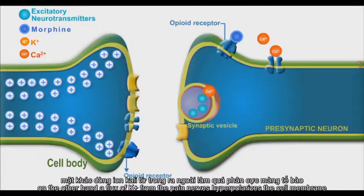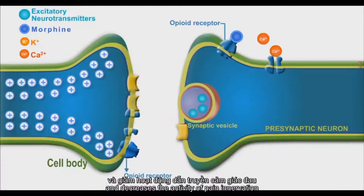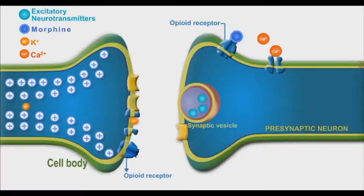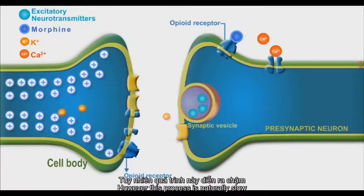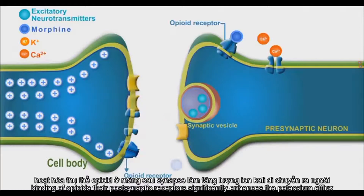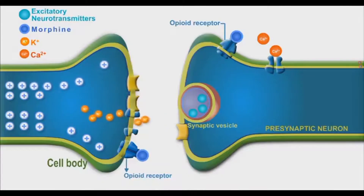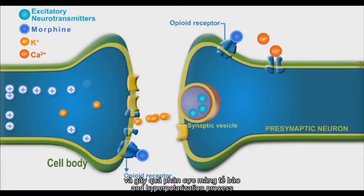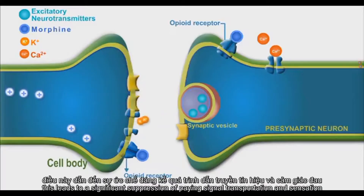On the other hand, a flux of potassium ions from the pain nerves hyperpolarizes the cell membrane and decreases the activity of pain innervation. However, this process is naturally slow. Binding of opioids to their post-synaptic receptors significantly enhances the potassium efflux and hyperpolarization process, leading to a significant suppression of pain signal transportation and sensation.